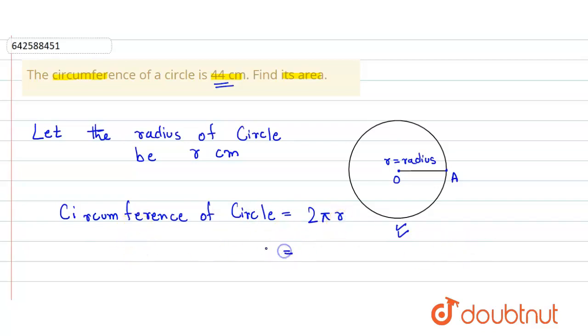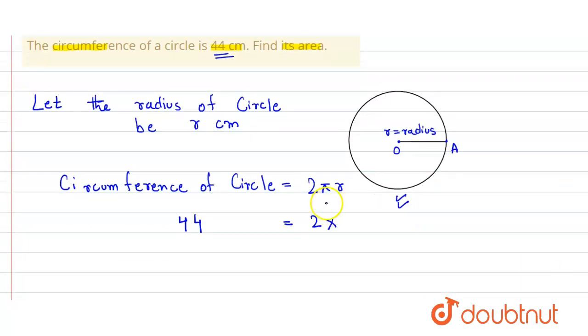Now we simply put the value. The circumference of circle is given to be 44 cm. So here it is 44 is equal to 2 into the value of pi which is 22 divided by 7 into r which we have to find out.